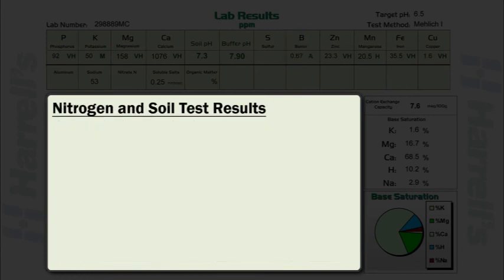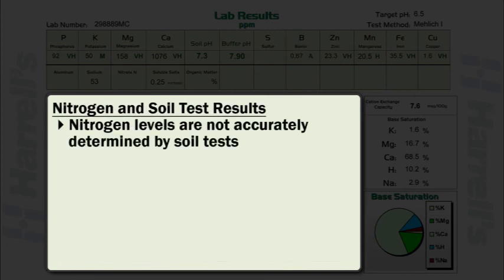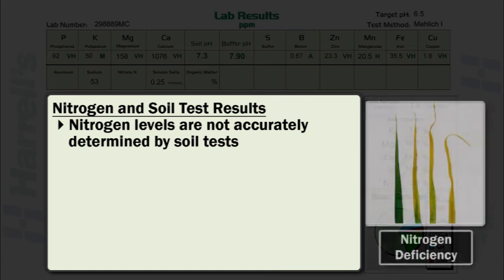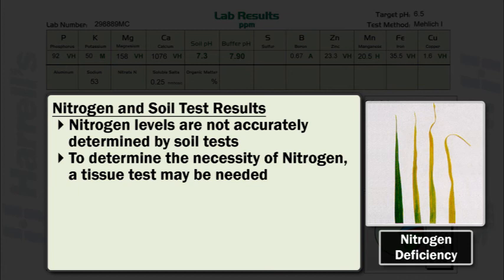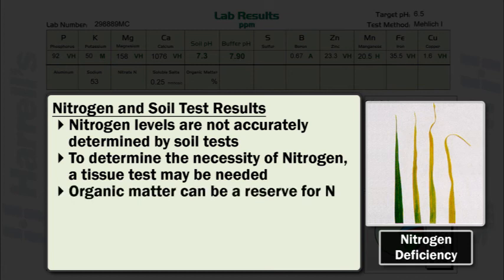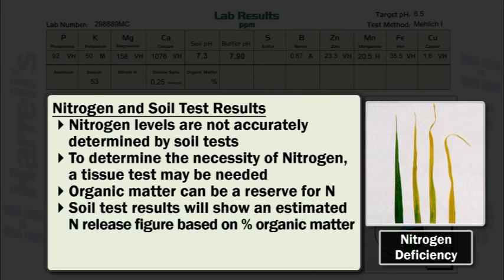Nitrogen levels are not accurately determined by soil tests, as the availability of nitrogen is subject to numerous soil environmental conditions. Therefore, to accurately determine the necessity for nitrogen in a fertility program, a tissue test may be needed in conjunction with a soil test. In some cases, organic matter serves as a reserve for nitrogen. Labs therefore list an estimated nitrogen release figure based on the percentage of organic matter present to estimate the nitrogen that will be released over the season in terms of pounds per acre.